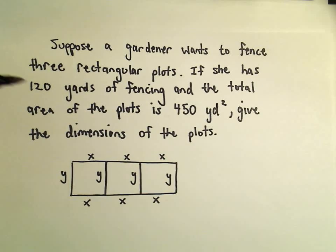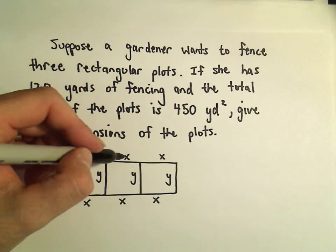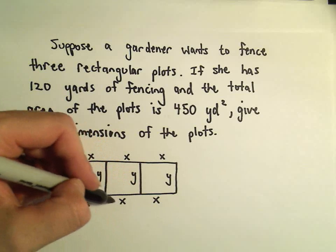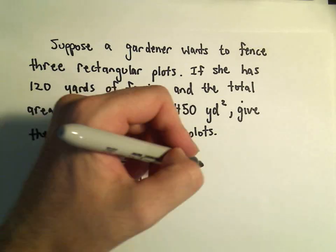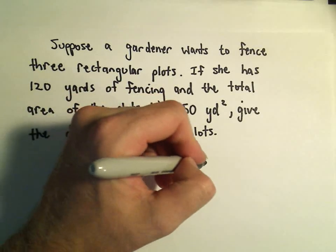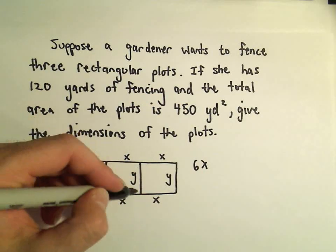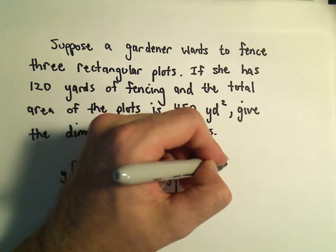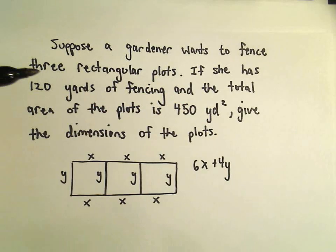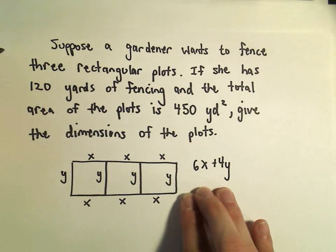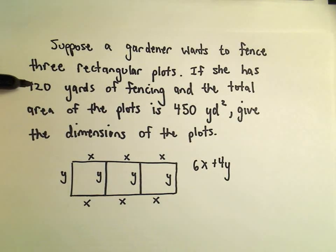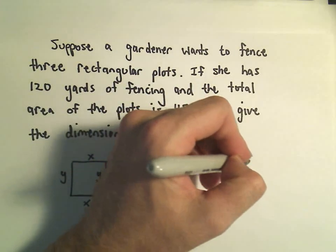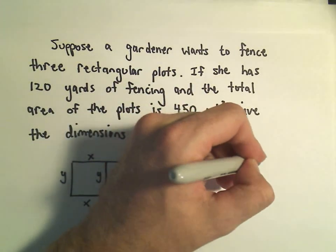If we add up 1x plus 1x plus 1x plus 1x plus 1x plus 1x, that's going to give us 6x plus 1, 2, 3, 4y. That's going to represent the amount of fencing that she's used. And we know that she has 120 yards of fencing total. So that's going to give us one equation to play with.